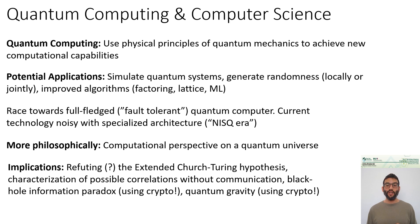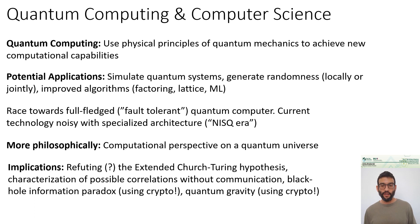Another aspect of quantum information theory is characterizing possible correlations between systems that are separated and cannot communicate. We know quantum information allows a broader class of correlations compared to classical systems. Other areas where quantum computing gives insight include the black hole information paradox, which actually uses quantum cryptography and aspects of quantum gravity.